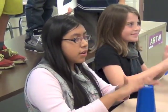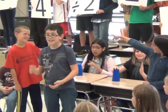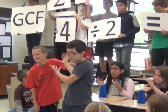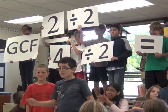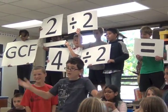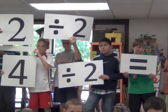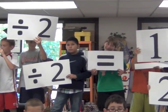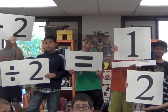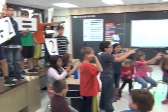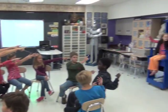When you reduce, you need the GCF — the greatest common factor. With that you must divide both the top and the bottom. Now you're a fraction master.